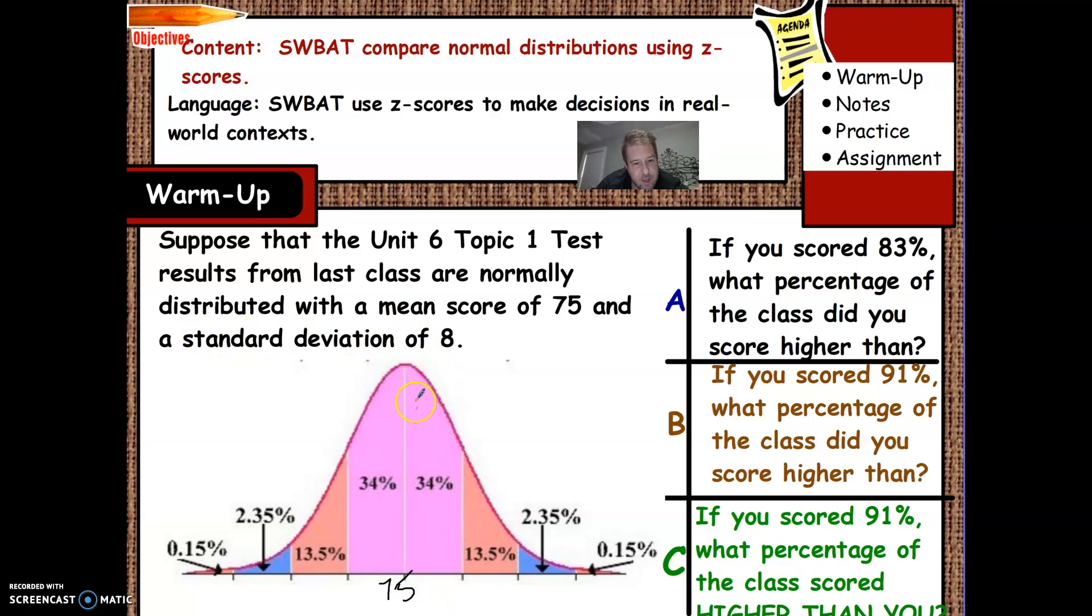And then our standard deviation of 8, which means I'm going up by 8, so this becomes 83 and then 91, and then 99. And then going down, you're subtracting 8, so this is 67 and then 59 and then 51.